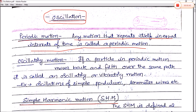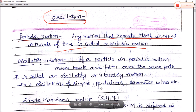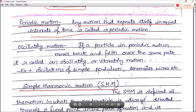What is oscillatory motion? A particle in a periodic motion that moves back and forth over the same path is called an oscillatory or vibratory motion. The same example is the oscillation of a simple pendulum and sonometer wires, in which the motion is oscillatory.